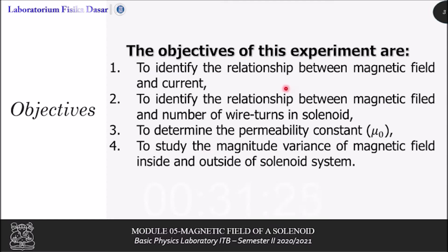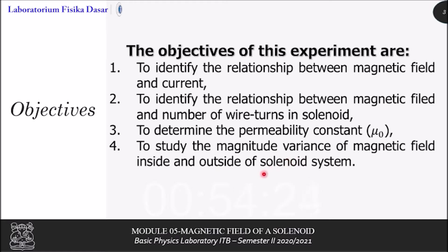The objectives for these experiments are: first, to identify the relationship between magnetic field and current; second, to identify the relationship between magnetic field and the number of wire turns in a solenoid; third, to determine the permeability constant or mu0; and fourth, to study the magnitude variance of magnetic field inside and outside of the solenoid system.